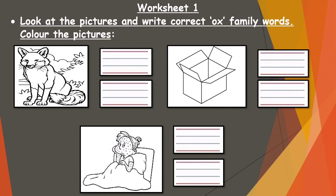So children, it's worksheet time now. You have to complete this worksheet. As the worksheet says, look at the pictures and write the correct Ox family words. After that, you have to color the picture. You have to write the correct word two times in the space given. The first picture is of fox — P-uh, ox, fox. Write it two times. Next is box — B-uh, ox, box. Third is also box — B-uh, ox, box. After writing the correct word two times, color the pictures and complete the worksheet.